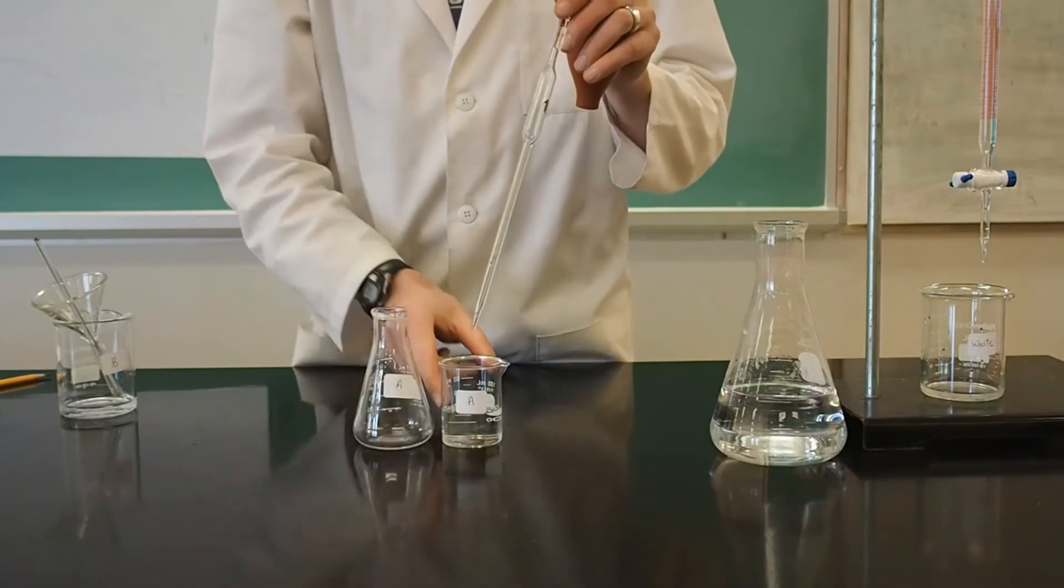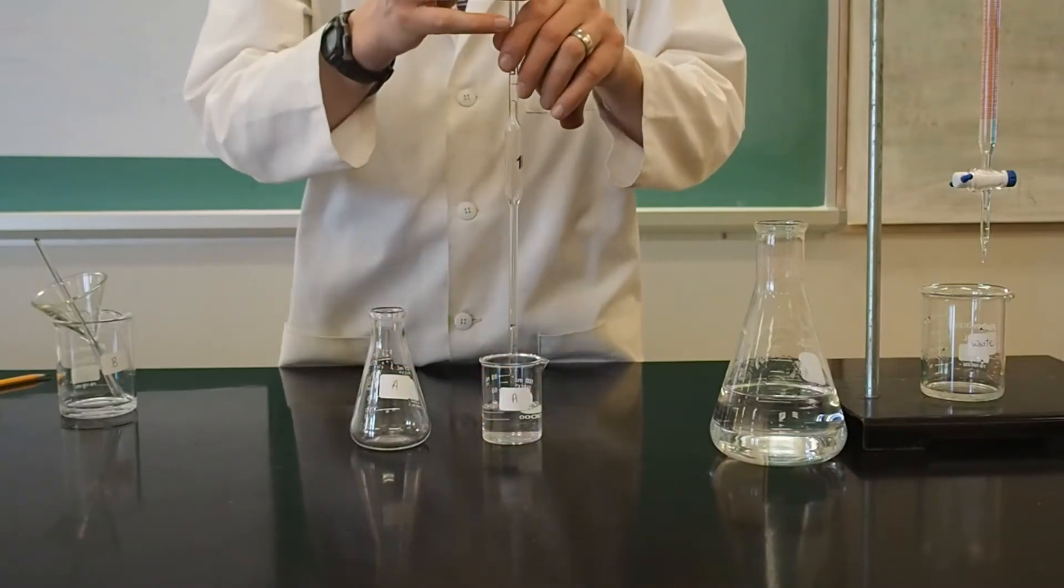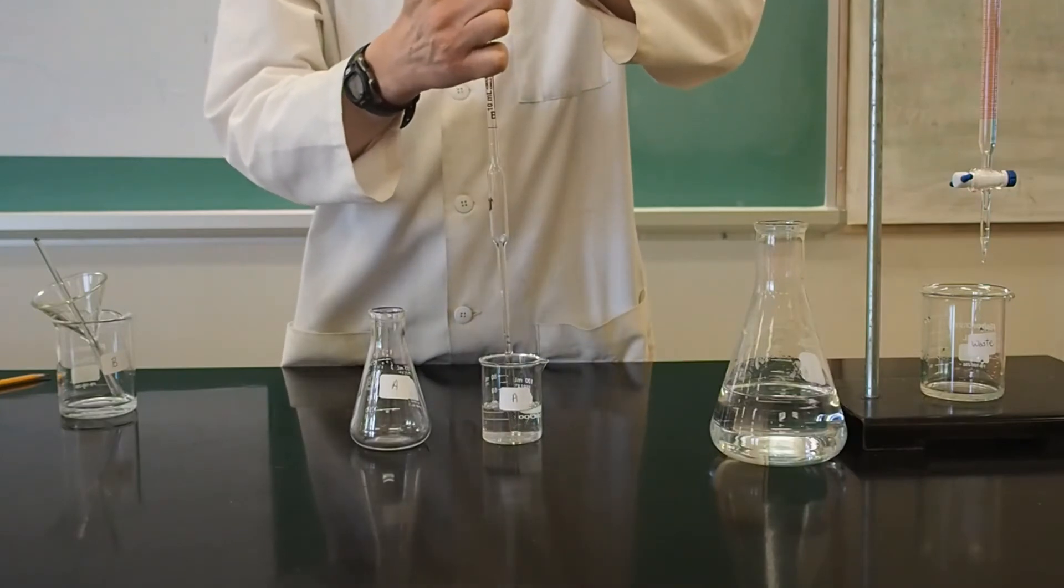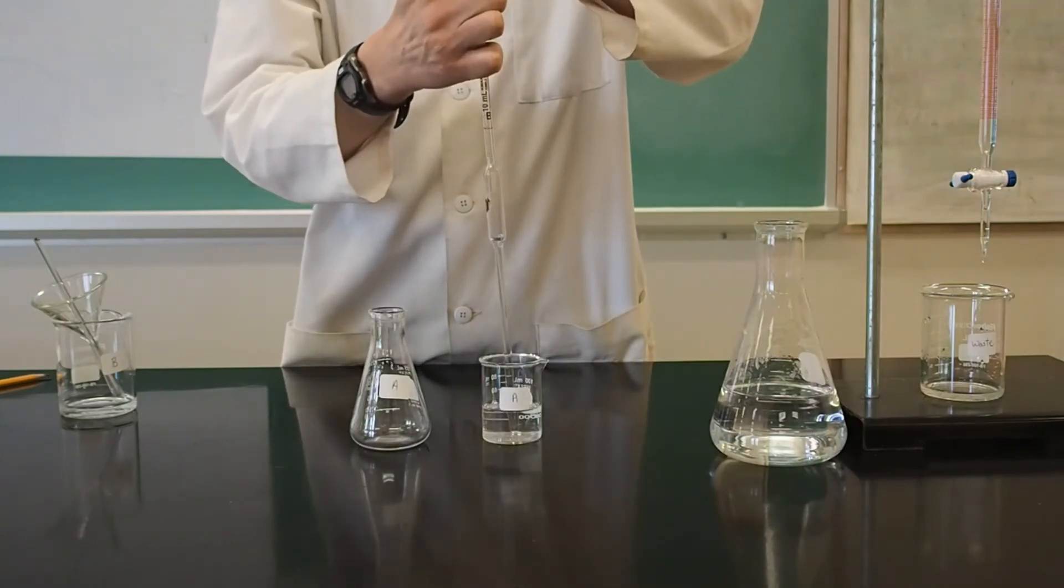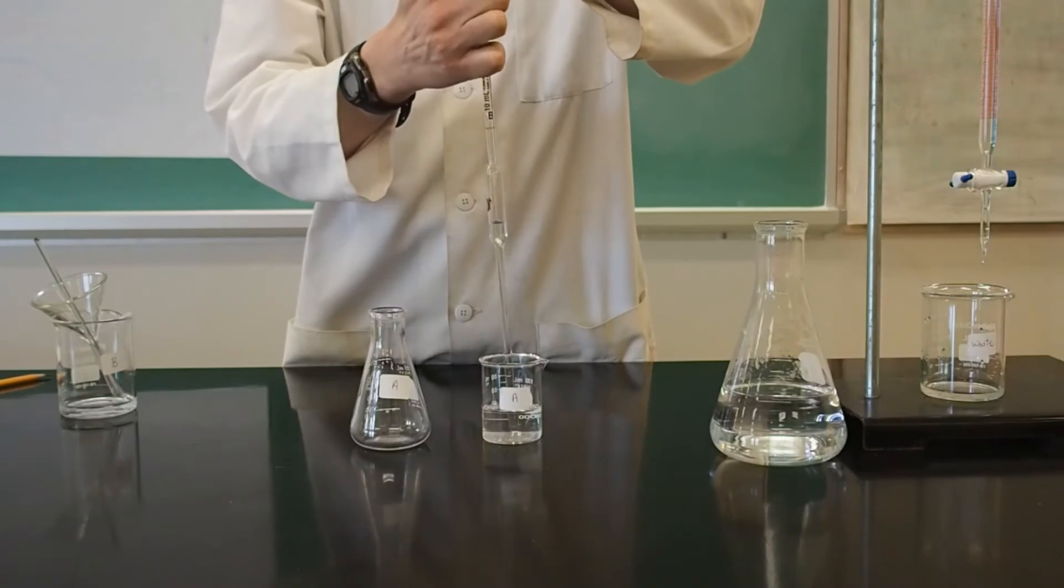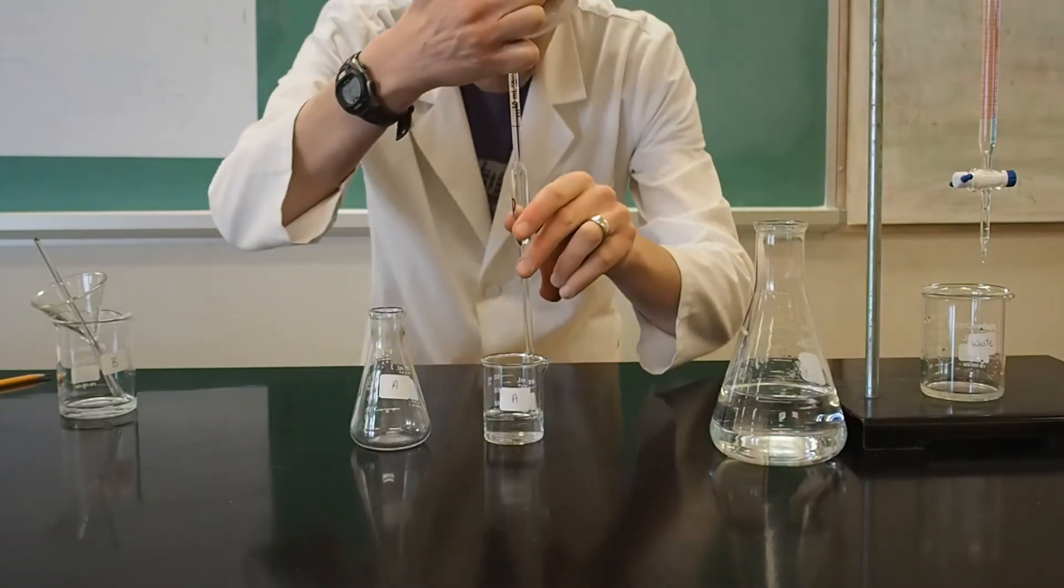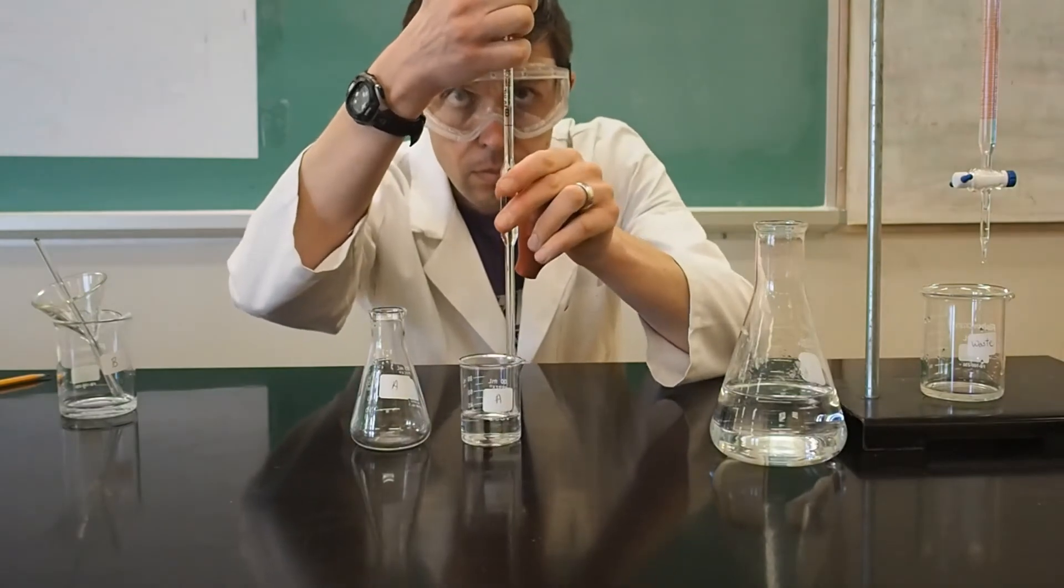Taking an aliquot is the term used for drawing up a specific volume of solution into the pipette. To take an aliquot, first place the pipette into the beaker containing the solution. Then squeeze and hold the bulb and place it on the end of the pipette. Place the bulb on the end just enough to form a seal. It should still be easy to pull it off without much effort.